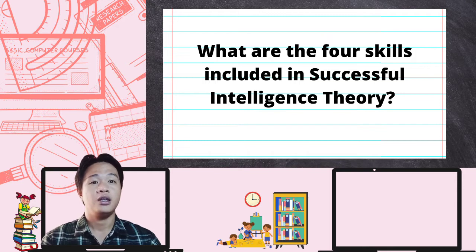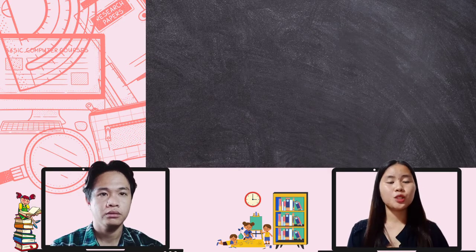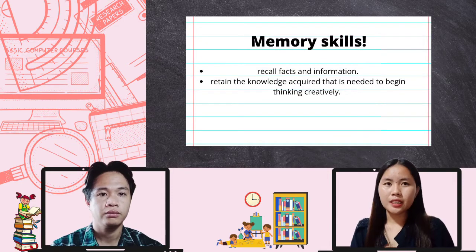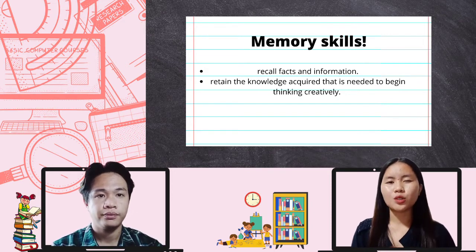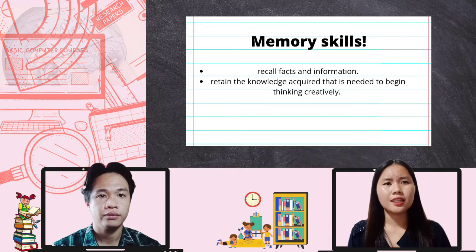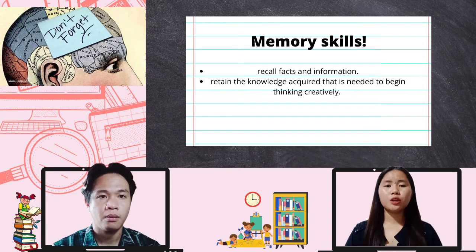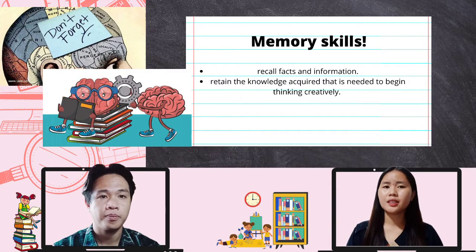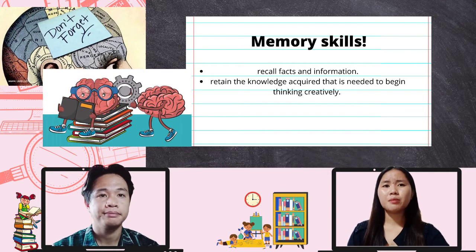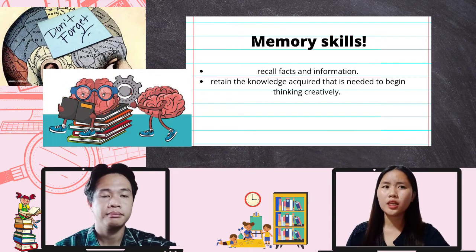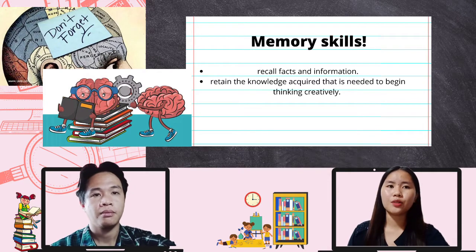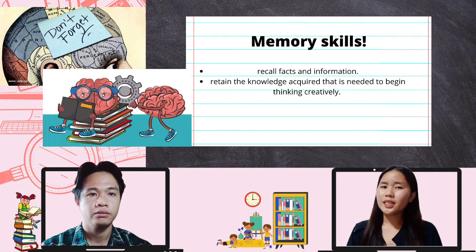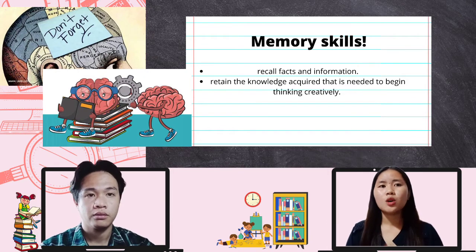Here are the four skills included in successful intelligence theory. The first is memory skills. Memory skills help a person recall facts and information and retain knowledge acquired, which is needed to begin thinking creatively. Kids often rely on both incoming information and information stored in working memory to do an activity. If they have weak working memory skills, it is hard to juggle both, making it challenging to follow multi-step directions. As noted by Omeldo in 2016, one cannot apply knowledge which one cannot remember.